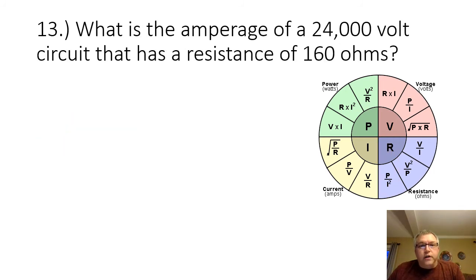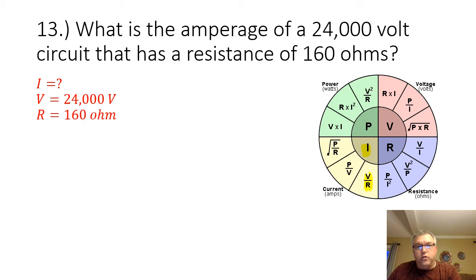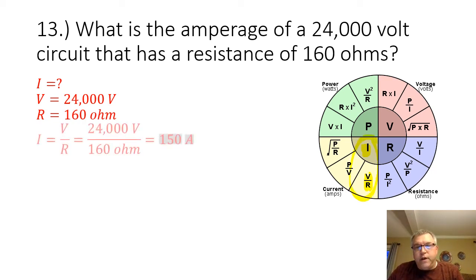Problem 13: what is the amperage of a 24,000-volt circuit that has a resistance of 160 ohms? We are looking for the current. We are given the voltage of 24,000 volts and the resistance of 160 ohms. Our equation is I equals V divided by R. 24,000 volts divided by 160 ohms gives me 150 amps.